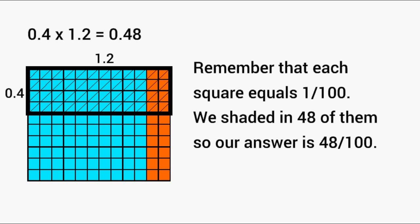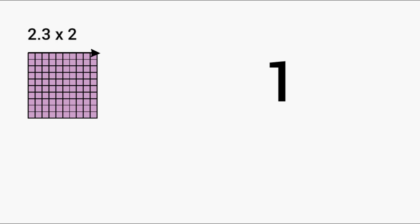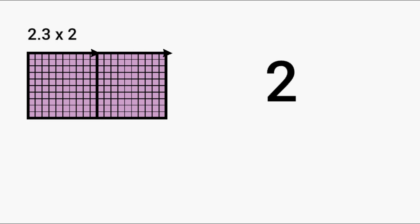Now we're going to multiply 2.3 by 2. First, let's start with the width of our figure. Here we have 1, 2, and 3 tenths. Now because we use 2.3 to represent the width of our model, we have to use 2 to represent the length of our model.